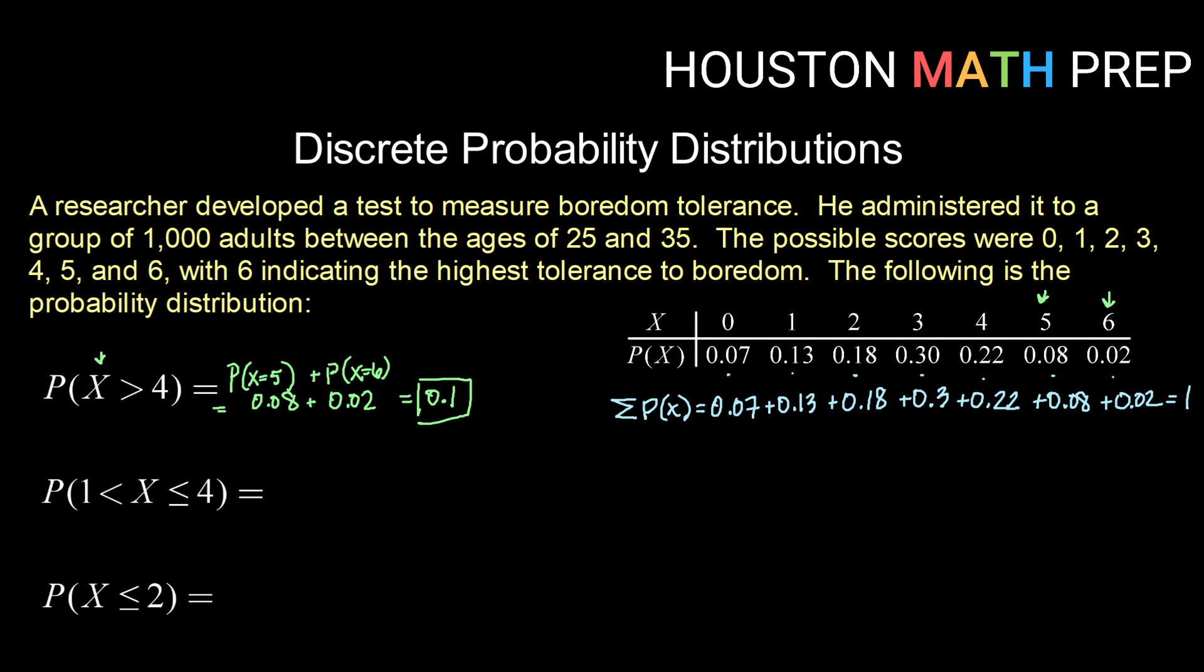Checking out our next one, what is the probability of getting a random variable X that is between 1 and 4, 4 being included? So this is less than or equal to here.